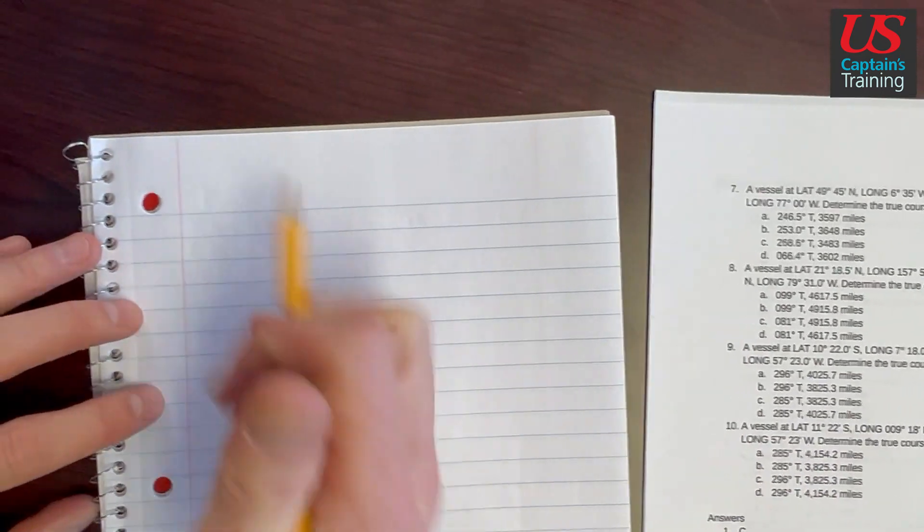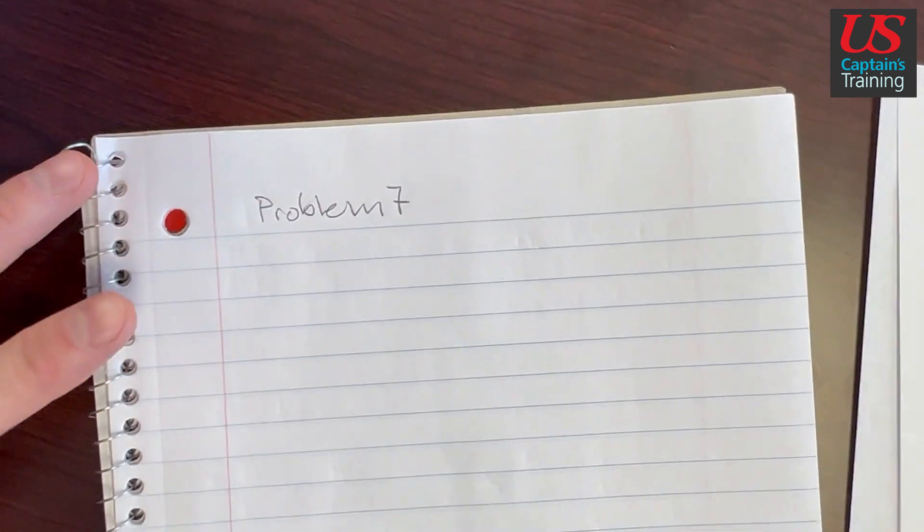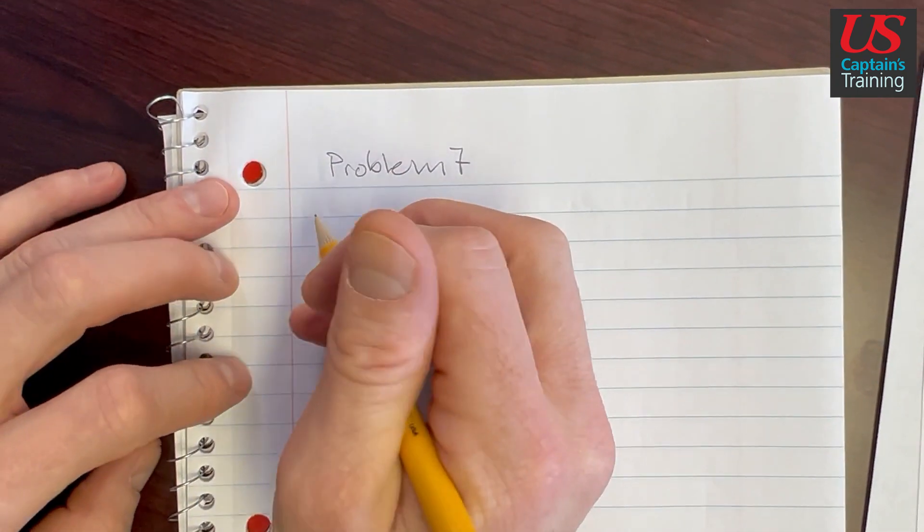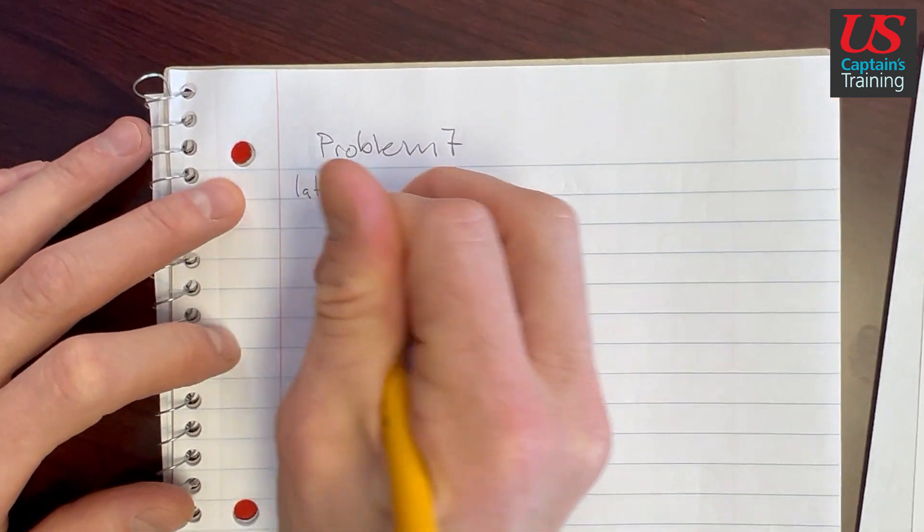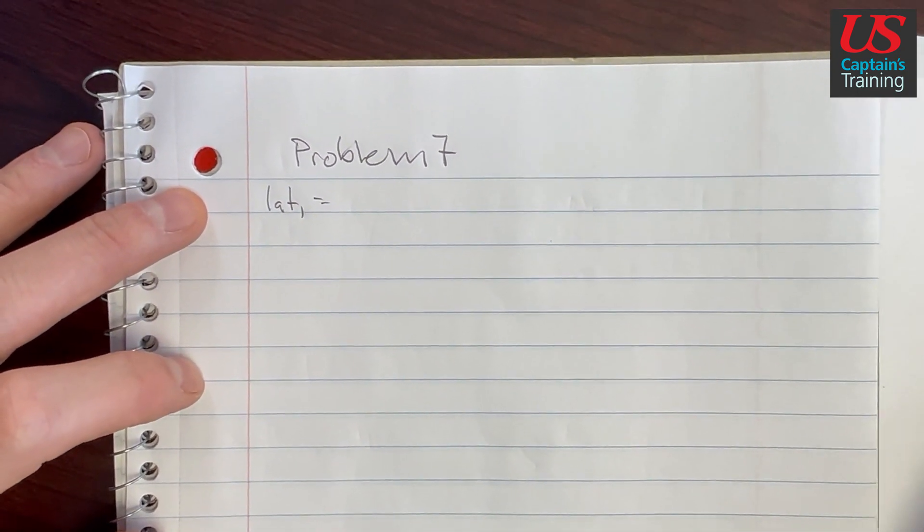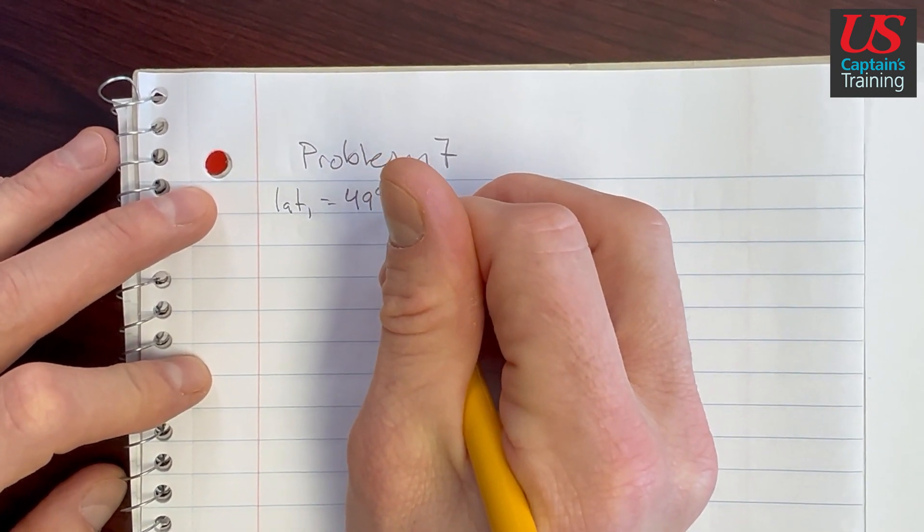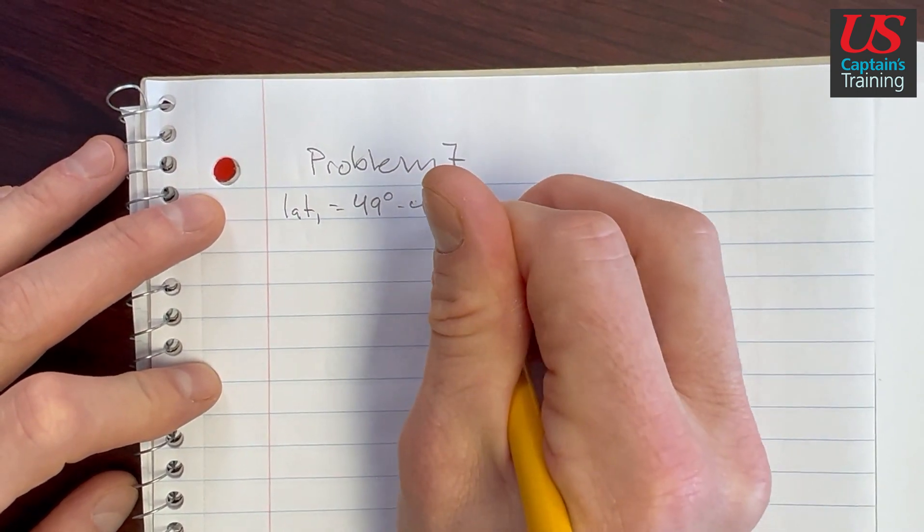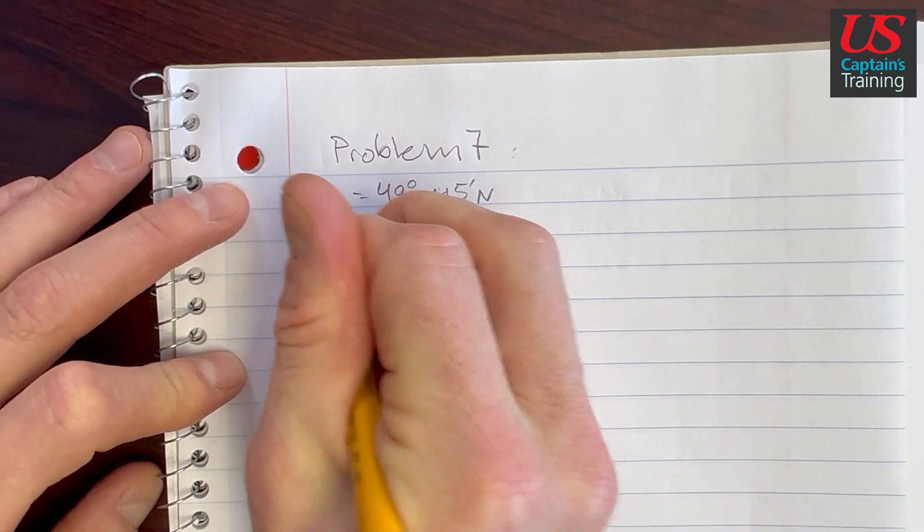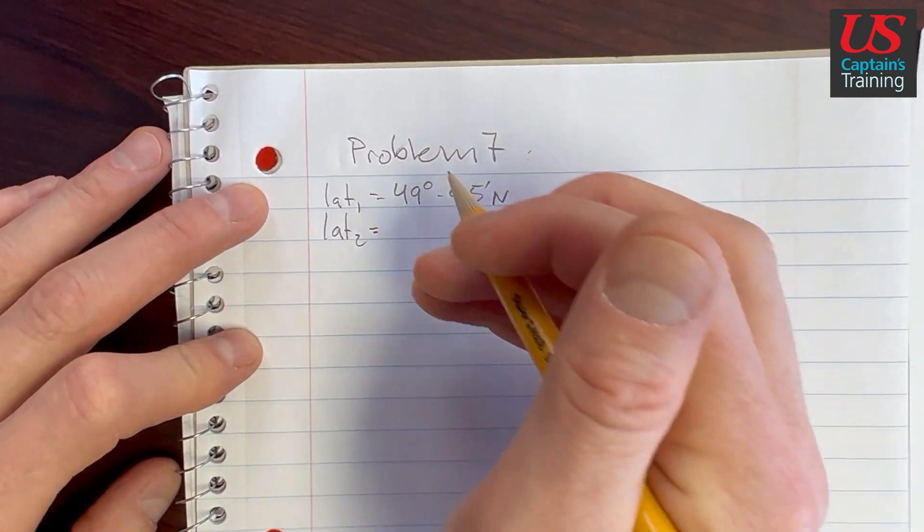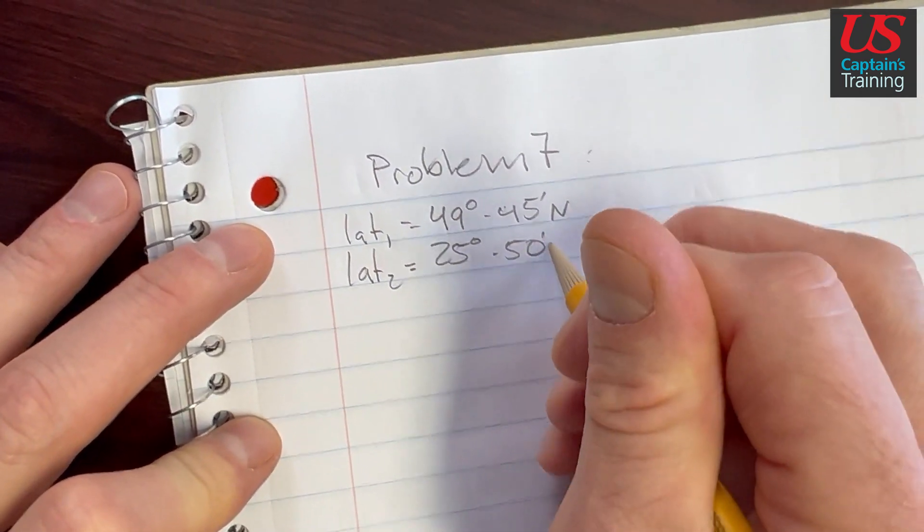So the first thing we're going to do is write a problem number. Problem seven. And now we need to figure out little l by lat 1 minus lat 2. So we're going to get latitude 1, which is equal to 49 degrees 45 minutes north. And then we have lat 2, which is equal to 25 degrees 50 minutes north.